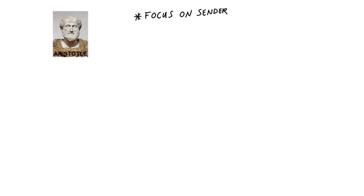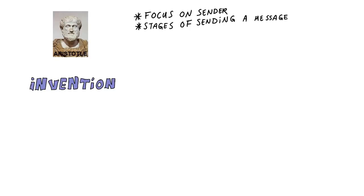Aristotle focused on the sender aspect of communication, and he uses a simple model to explain the different stages of sending out a message. First of all, the topic of the message is determined — this is the invention stage of communication. Then the style of the message is determined. Thirdly and finally, the message will be delivered.